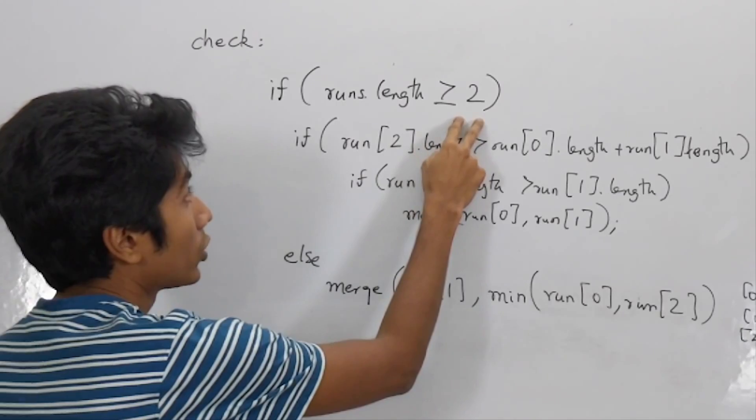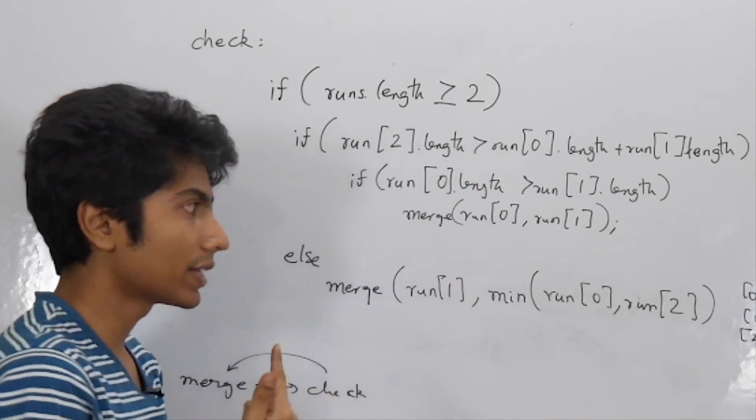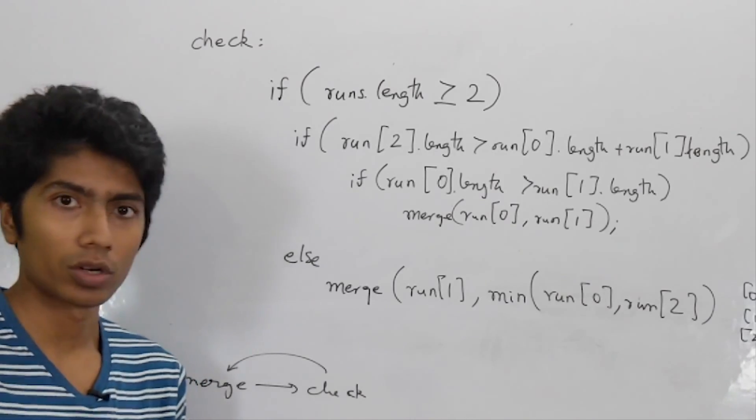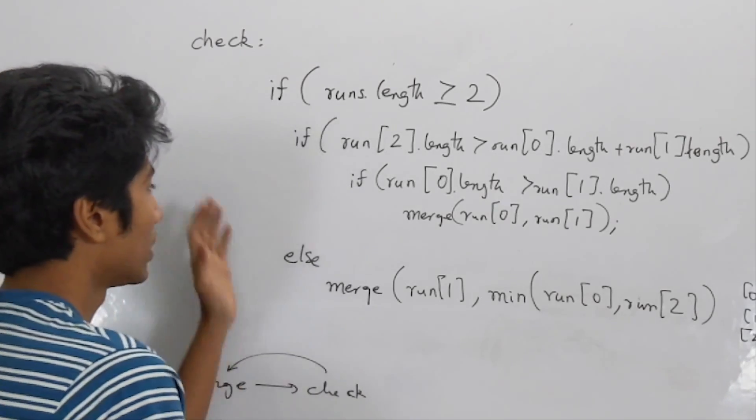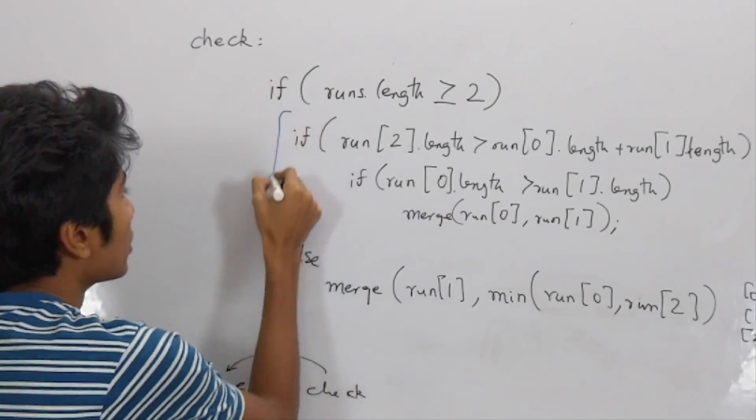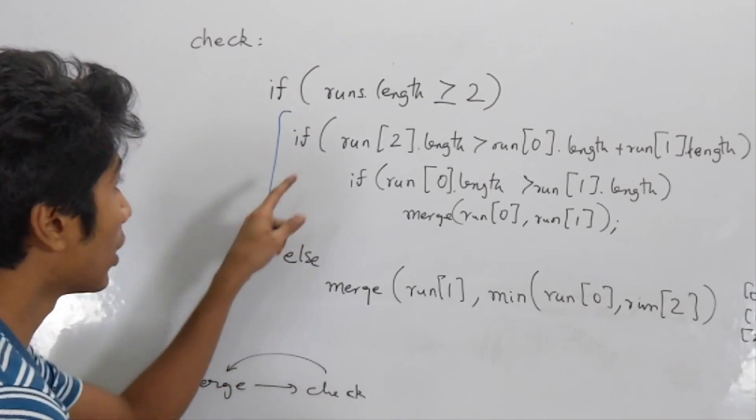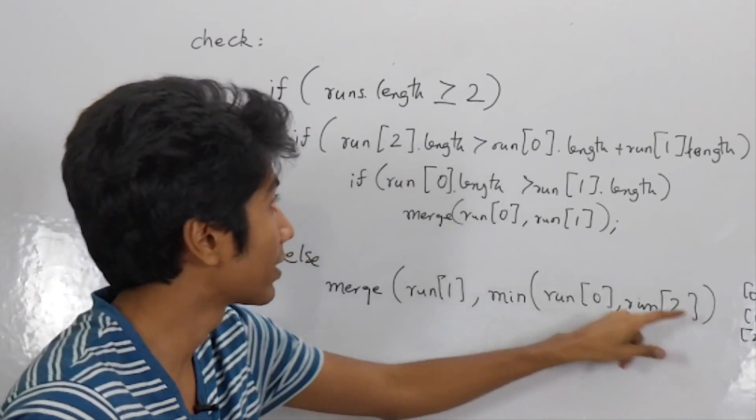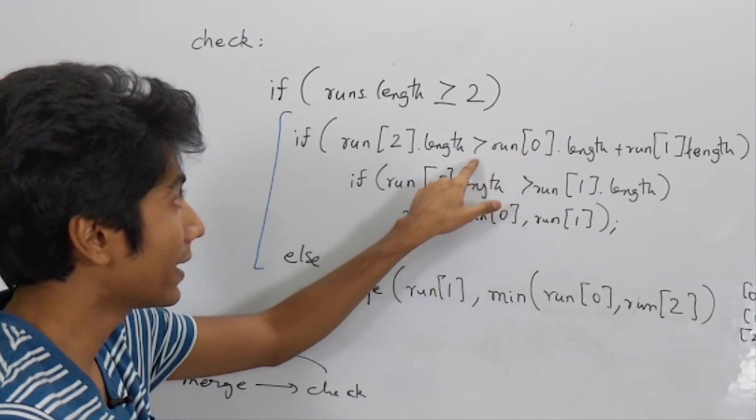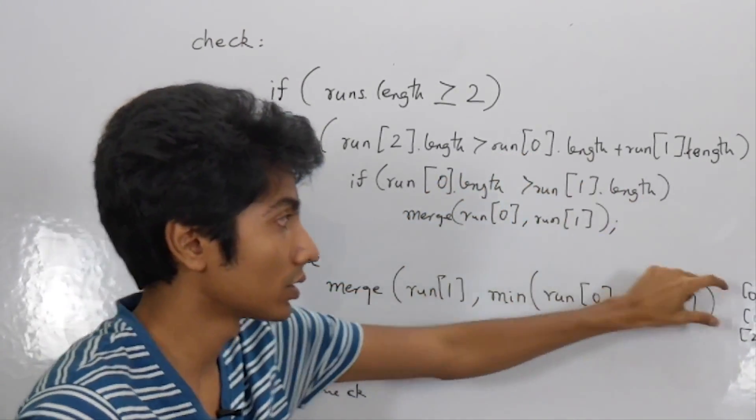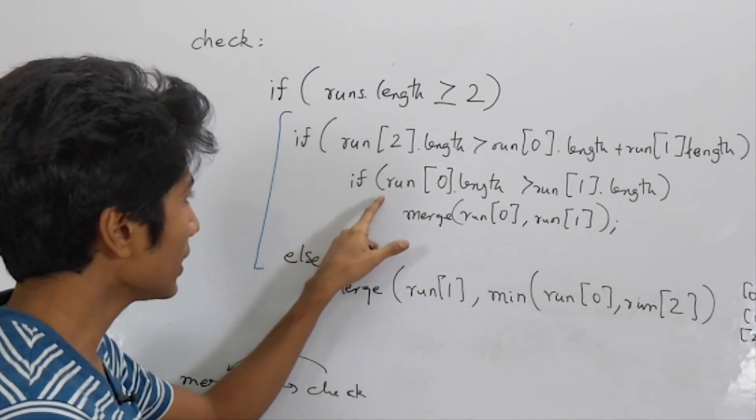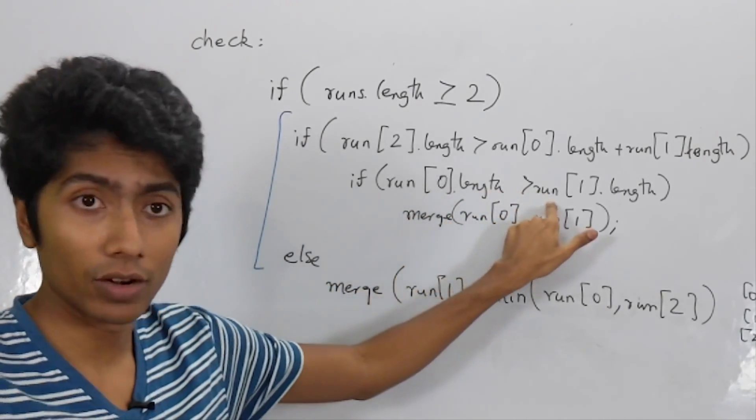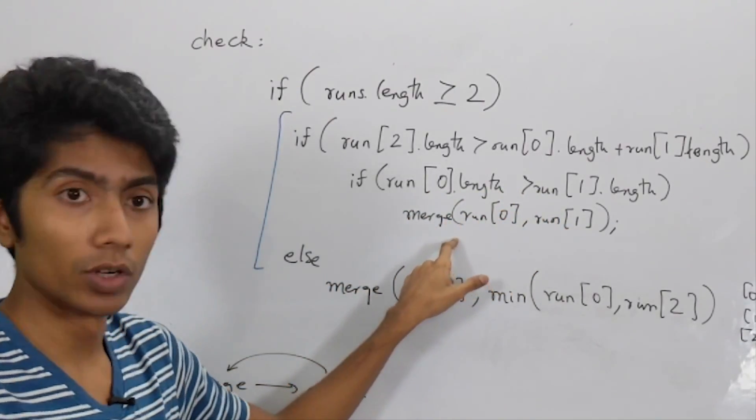Let's have a look at the code. If the number of runs are greater than two, greater than equal to, which means that if there's not just one chunk remaining, well, one chunk means that your entire array is sorted, whatever you had till now. So that's useless. We are mainly concerned with this bit. Now, if the run number two, which is the third run effectively, is greater in length than the first two runs, the top two runs, then we have to look at whether the top run is greater than the second run. Then we do a merge.